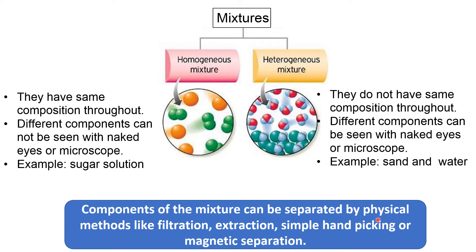The components of a mixture can be separated by physical methods like filtration, extraction, simple hand-picking, or magnetic separation. For example, in the sugar solution, we can separate the sugar from solution by evaporation — if we evaporate the water, we are left with the sugar. Similarly for sand and water, if we evaporate the water we are left with sand, and sand and water can also be separated by filtration.